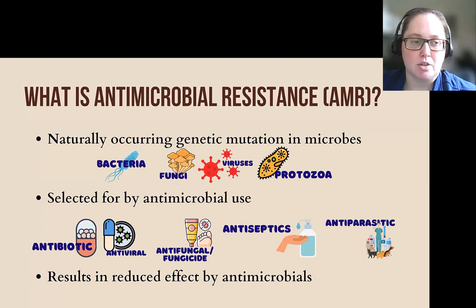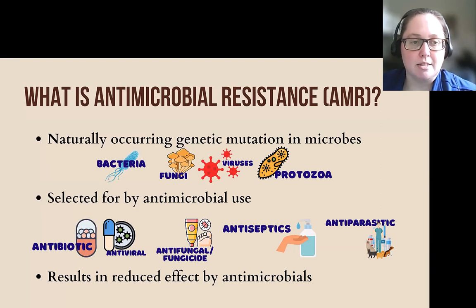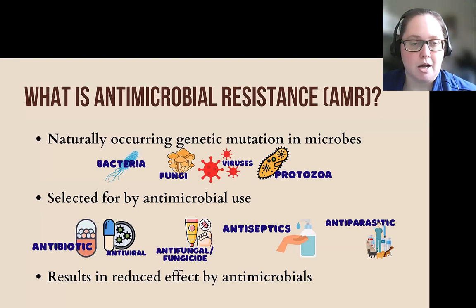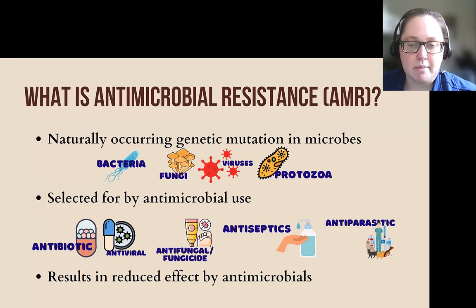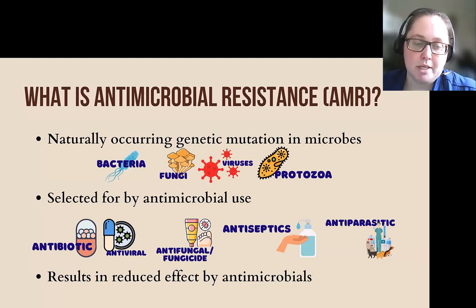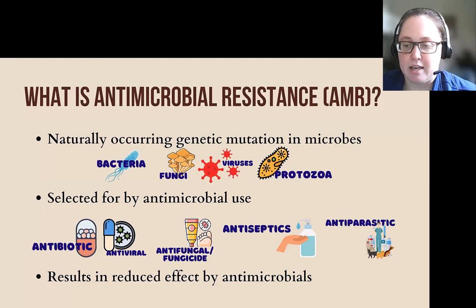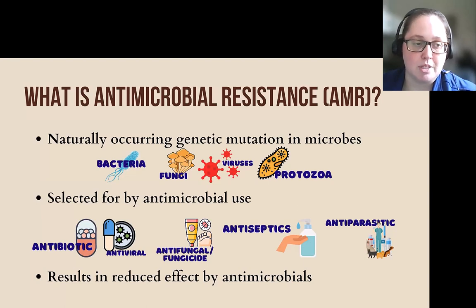Antimicrobial resistance starts with naturally occurring genetic mutation among specific species of microbes — and that could be any kind of microbe. We're talking often about bacteria, but it could be another type as well, like a fungi. There's a lot of natural variation in the genome of any of these species, just like there is in humans, and some of that variation results in some microbes having adaptations that allow them to resist or tolerate the presence of an antimicrobial.